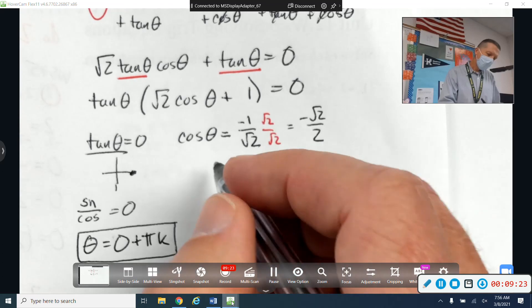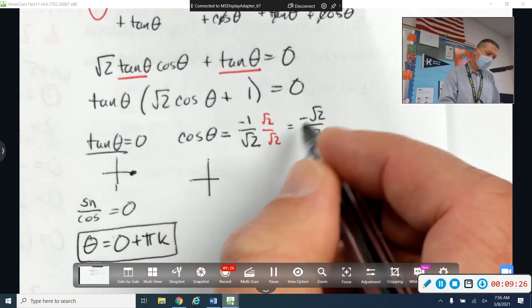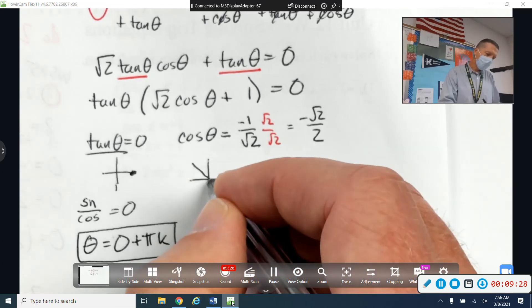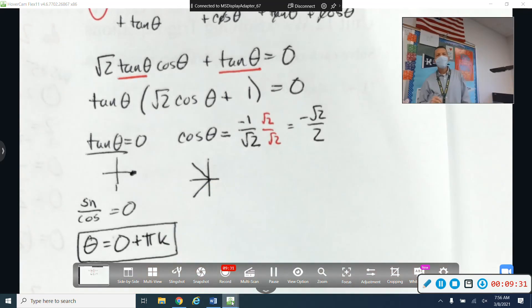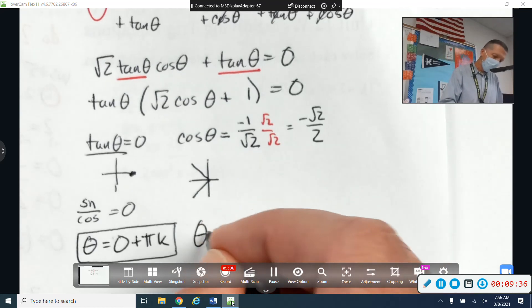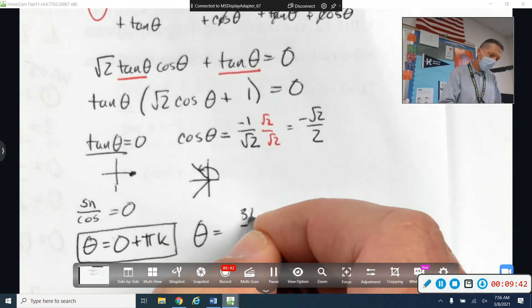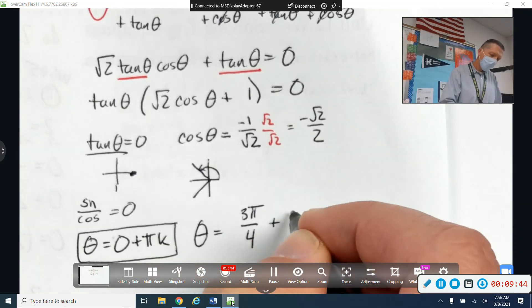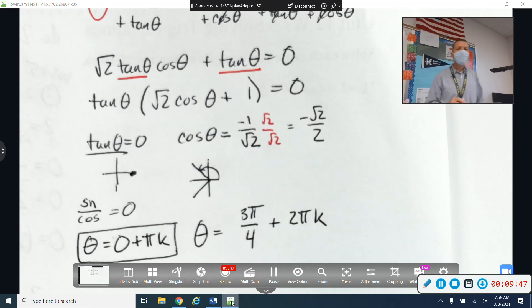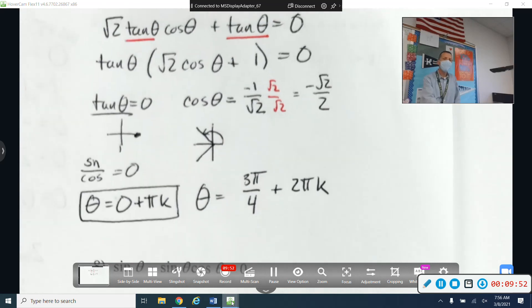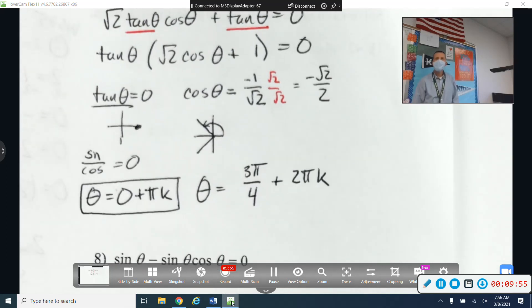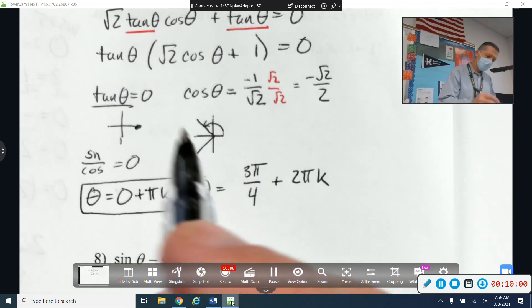Let's see. Then cosine is negative root 2 over 2. So cosine is negative on the left. And it's root 2 over 2 at the over fours. So something over four. Three pi over four plus 2 pi k. And what's the one in the third quadrant?